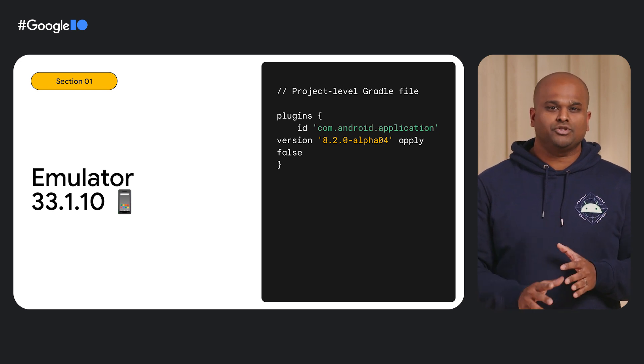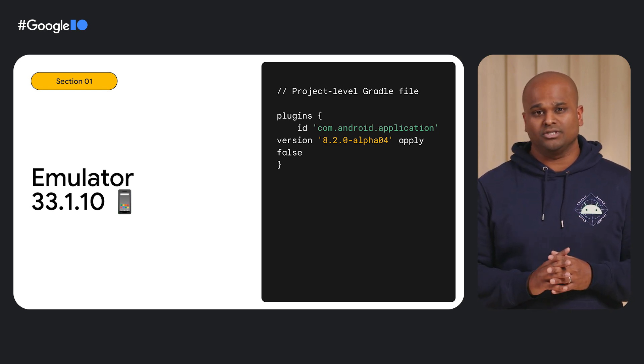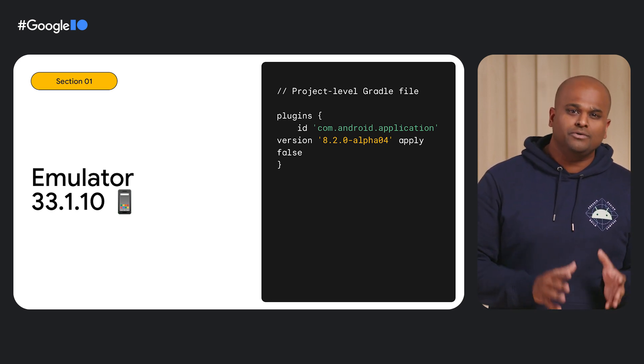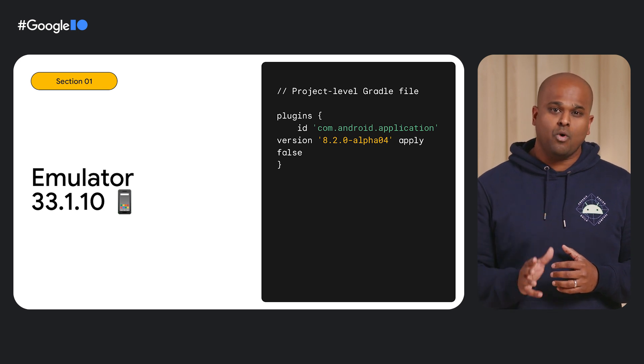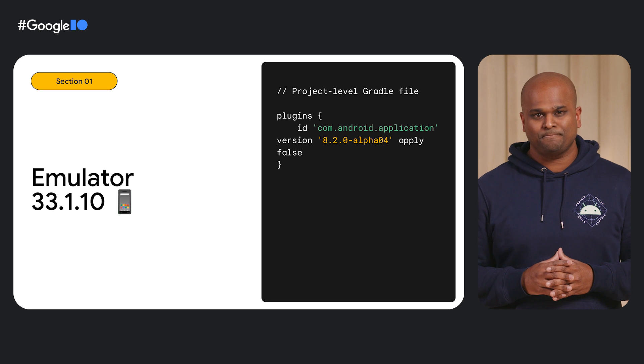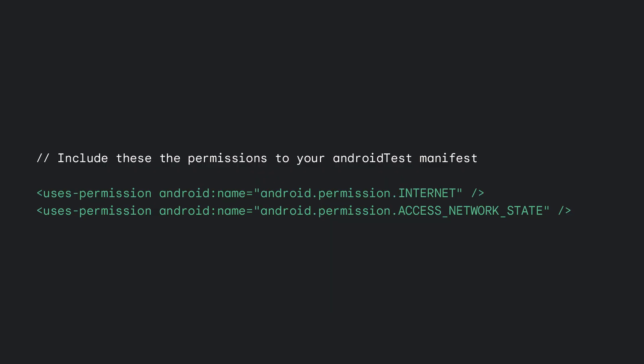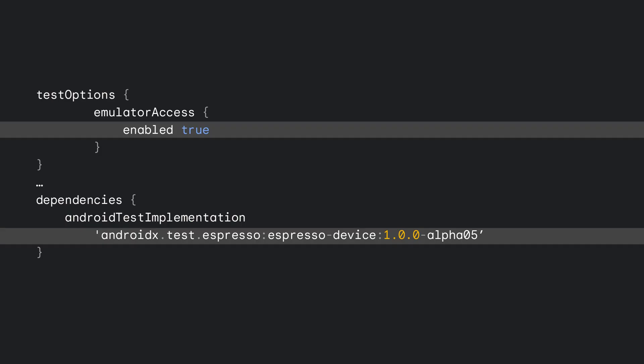Before you get started, you'll need to make sure your project is using the latest Canary version of Android Gradle Plugin 8.2, and that you've downloaded and installed Android Emulator 33.1.10 or higher from the SDK Manager. Next, make sure your app grants the internet and access network state permissions — you can add this to only the Android test manifest so it doesn't affect your release version. Finally, in your app module Gradle file, set test options emulator access enabled to true, and import the Espresso Device library into your app project.